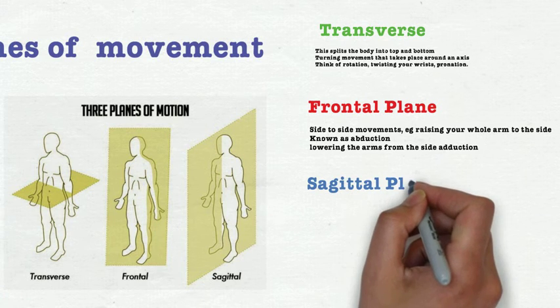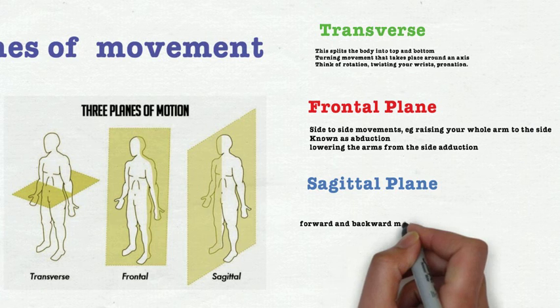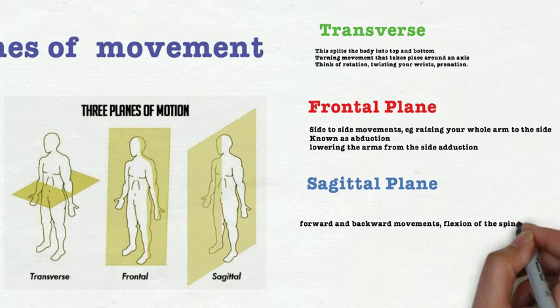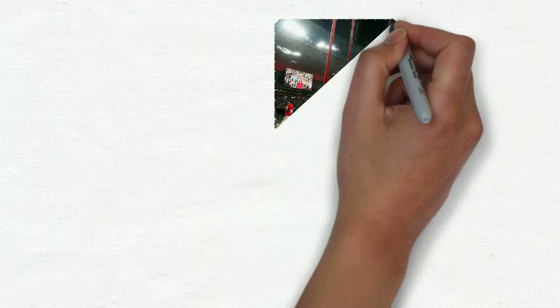So if you're having a lateral raise, that would be appropriate. And then the last one is the sagittal plane. And this is where we have a forwards and backwards action. So that's the easiest way to remember those. Now let's look at those in practical situations, sporting examples.